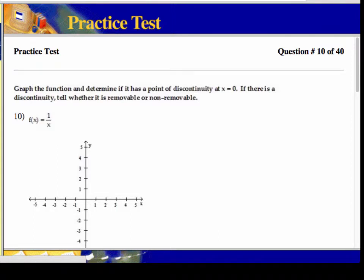It says graph this function and tell whether it's removable or non-removable. So it has a discontinuity at x equals 0 because if I were to plug in a 0 on this one, in other words, f of 0 is equal to 1 over 0. That makes it undefined, so it's discontinuous. There's a discontinuity when x equals 0.